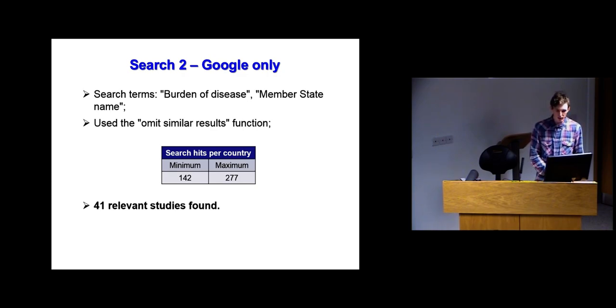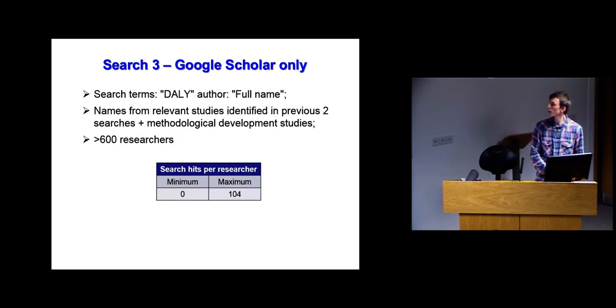For the third search, I used the terms DALY and the names of researchers that I'd found in the previous two searches. I'd found more than 600 researchers in total, so this took quite a long while. There were search hits between zero and 104. From this part, I found 73 studies.